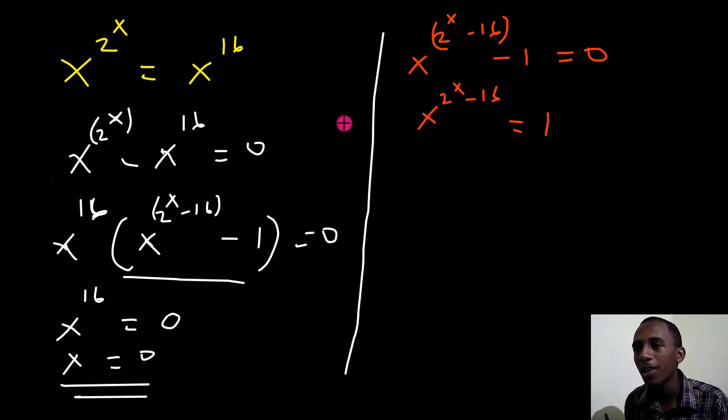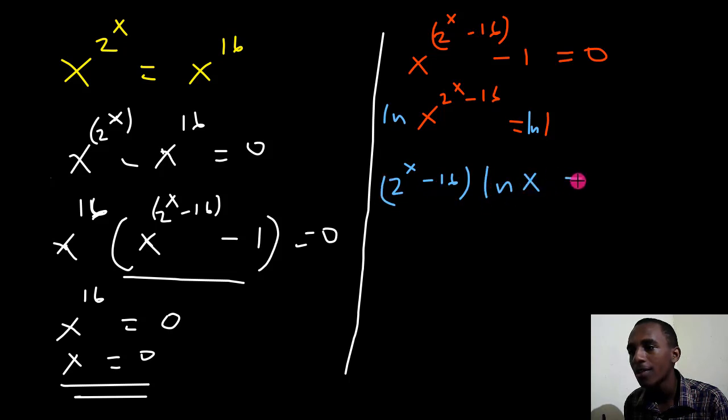So let me just show you that here. So I'll put natural log here and natural log here. This becomes 2 to the power x minus 16 times the natural log of x equals the natural log of 1 is 0.